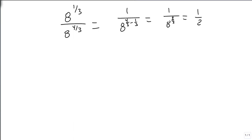Likewise, if we need to, we can look at 8 to the 1 3rd over 8 to the 4 3rds. Because this is going to use the quotient rule where we subtract, since our bottom is bigger, we're going to get 1 over 8 to the 4 3rds minus 1 3rd, which is 8 to the 3 3rds, which is 1 over 8, and we are done.